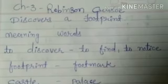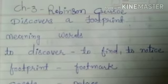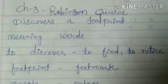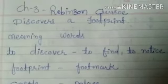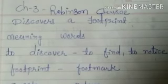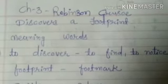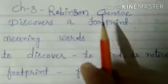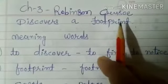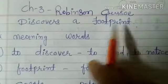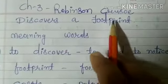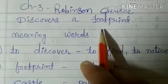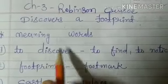Hi students, today in this video we go for exercise of chapter 3, Robinson Crusoe discovers a footprint. It is the name of the chapter. We start now from the meaning words.